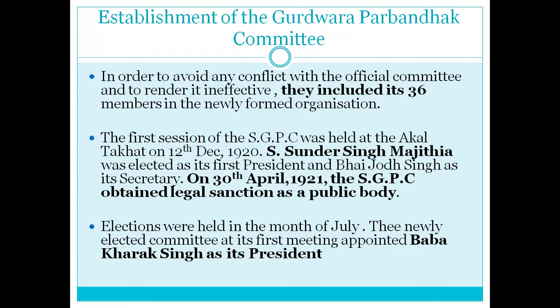The first session of the Shiromani Gurdwara Prabandak Committee was held at Akal Takhat on 12th December 1920. Sardar Surinder Singh Majithia was elected as its first president, and Bhai Jodh Singh as its secretary. On 30th April 1921, the SGPC obtained legal sanction as a public body. Elections were held in the month of July, and the newly elected committee at its first meeting appointed Bhai Kharak Singh as its president.